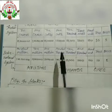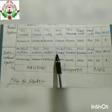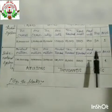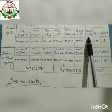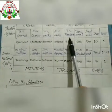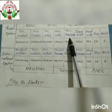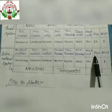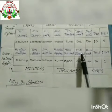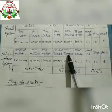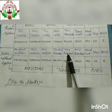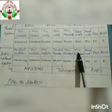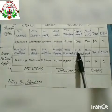Children, in both systems the first five places — one, two, three, four, five — are the same in the Indian system and in the international system. Both are the same.